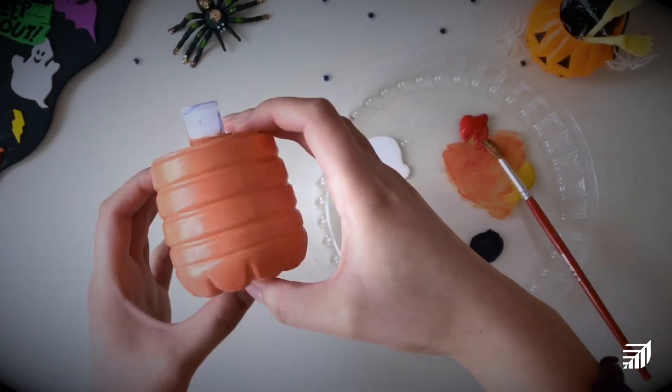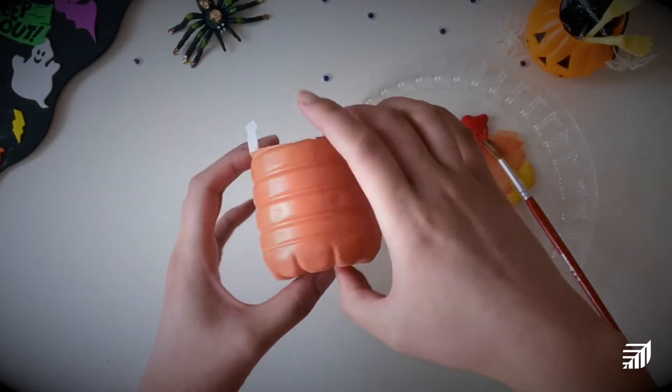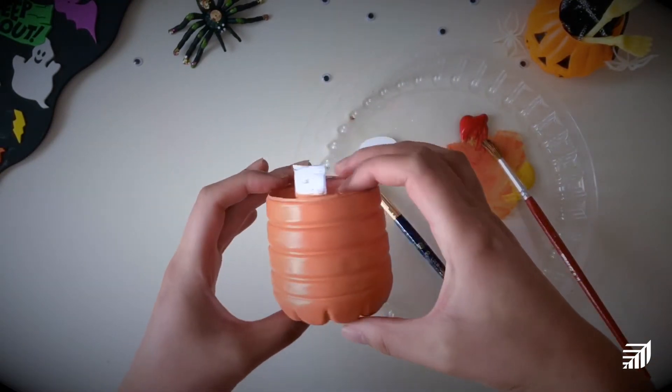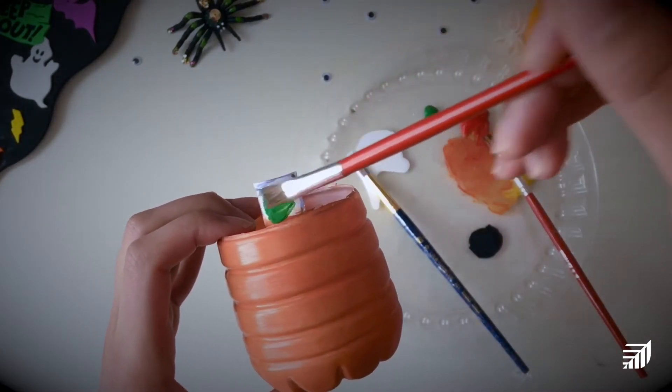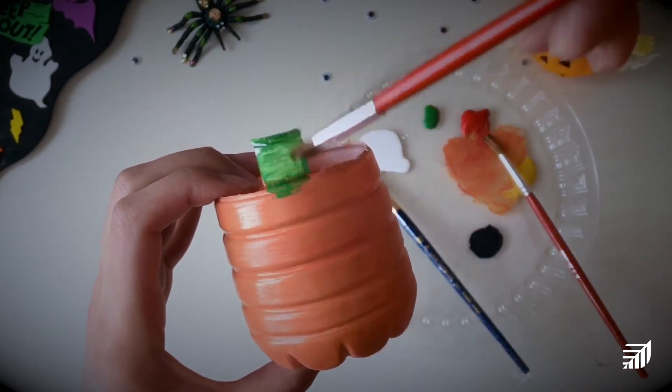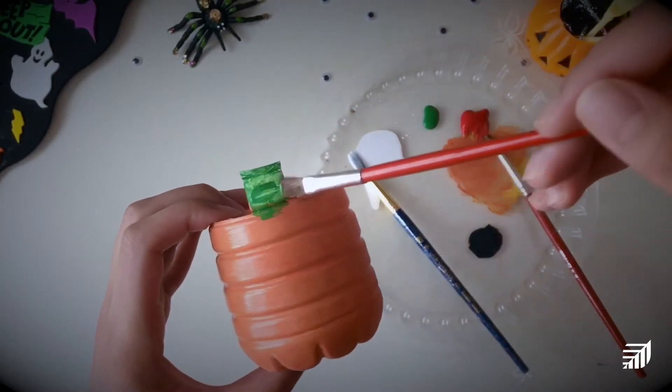This is how our little pumpkin planter is looking after the second coat was applied. Next I'm going to move on to the stem and paint that green. To get this to be opaque, we're probably going to need two coats as well. So I'm just going to paint it, let it dry, and then do another coat of green on top.